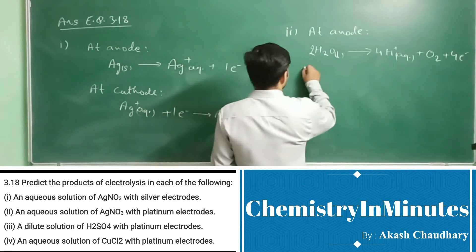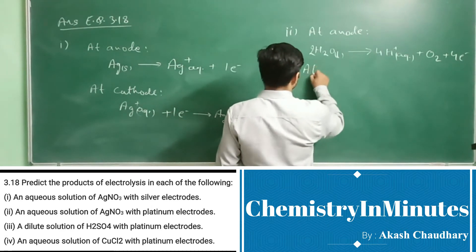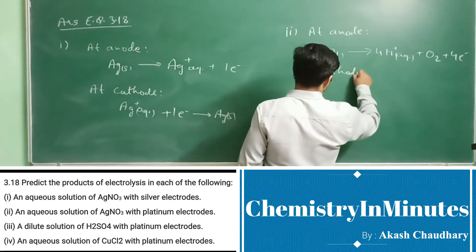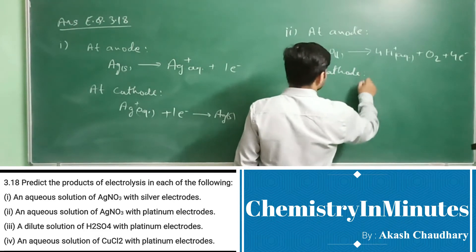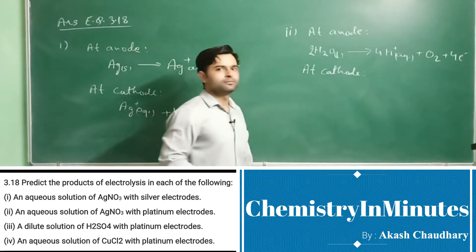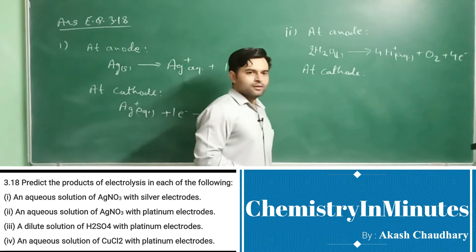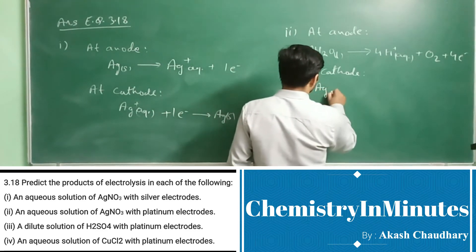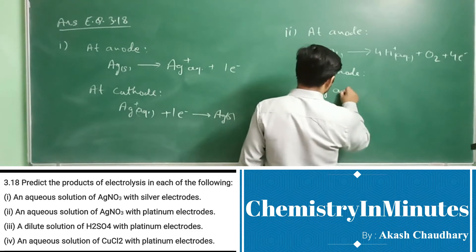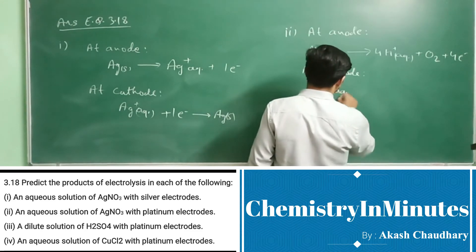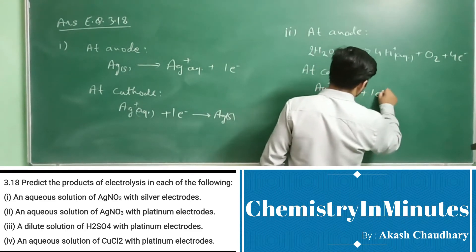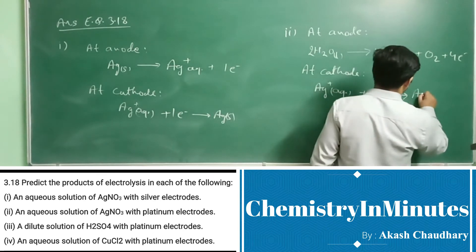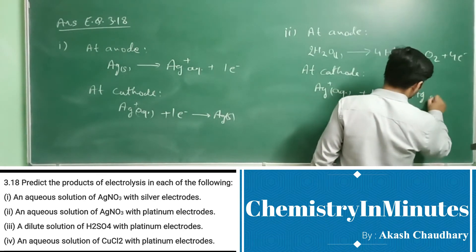At cathode, reduction of silver will take place: Ag⁺(aq) + e⁻ → Ag(s). So silver metal is deposited at the cathode.